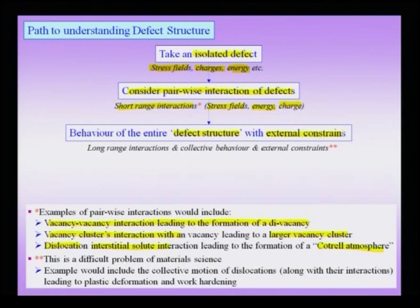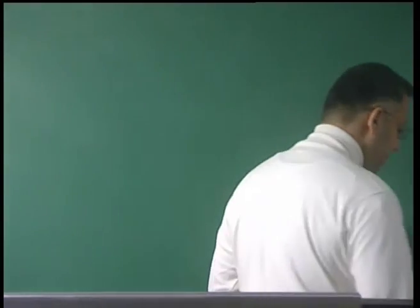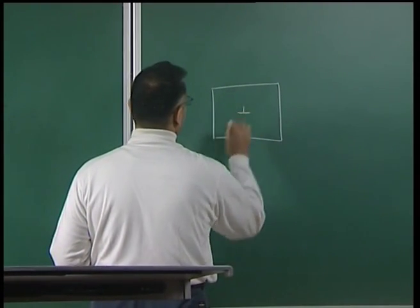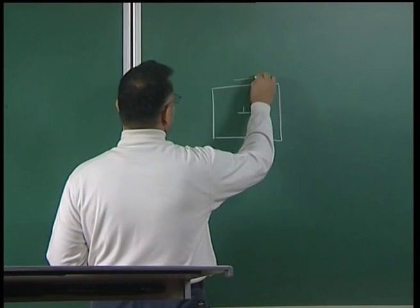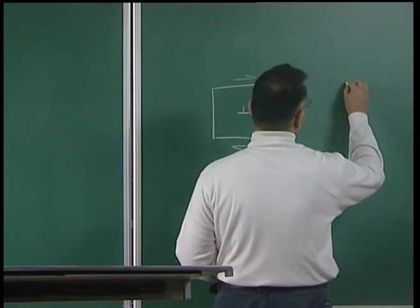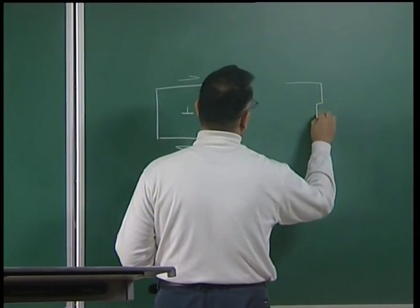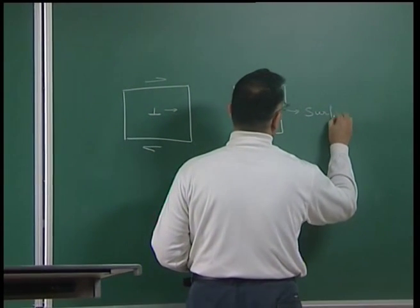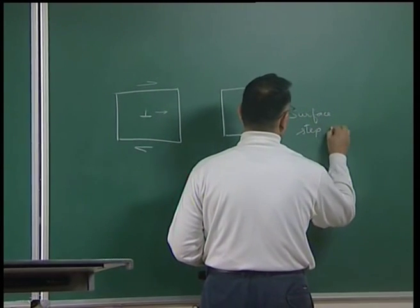I need to account for external constraints because internal defects can influence each other, and external influences also play an important role in how these defects behave. For example, suppose I have an edge dislocation in a material and I apply a shear stress on this material — there is a tendency for this dislocation to move, and finally this dislocation would come out of the crystal and create a surface step of magnitude b.